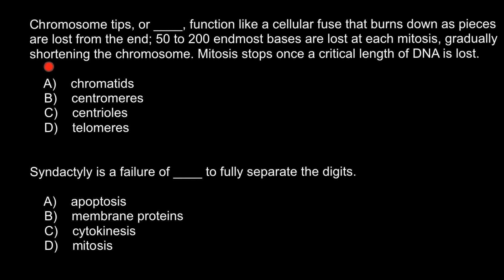There are four answers to choose from. Answer A: chromatids. Chromatids are basically chromosomes during the interphase of cell development. Each chromosome makes a copy of itself, and now we call each chromosome connected at the centromere 'sister chromatids.' Once they separate, we call them chromosomes again. The centromere is just the thinnest part of each chromosome, and its position can vary depending on the chromosome.